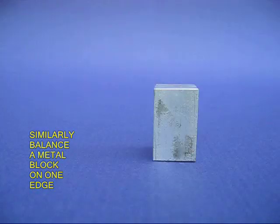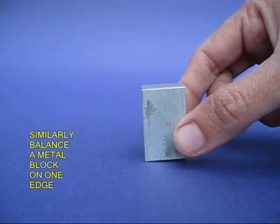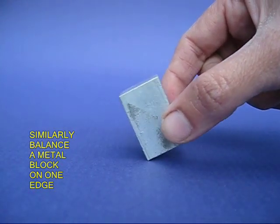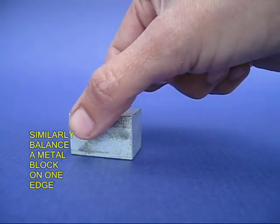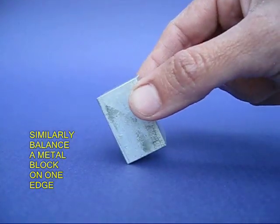Now take a metal block. Try balancing it on one of its edges. No matter how hard you try, every time it will topple over.